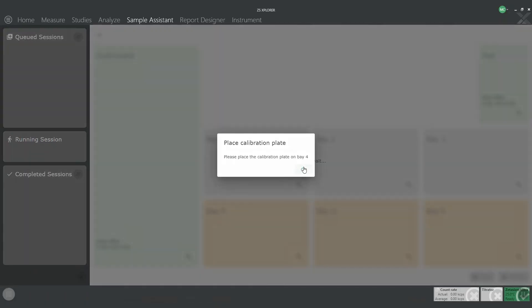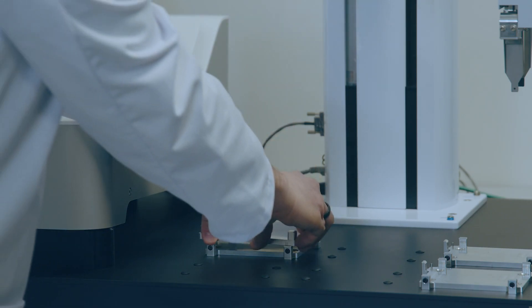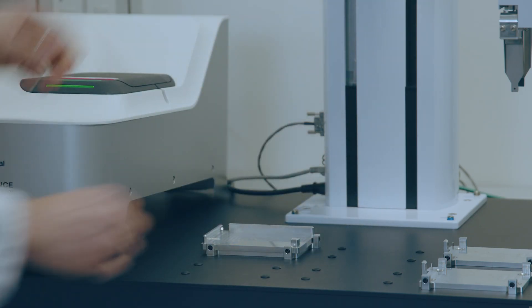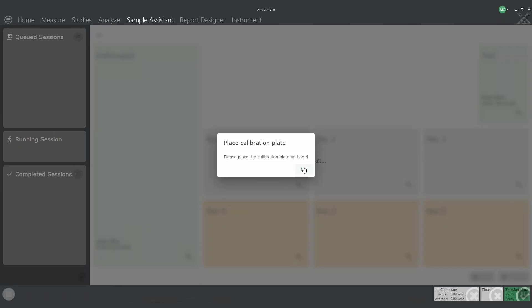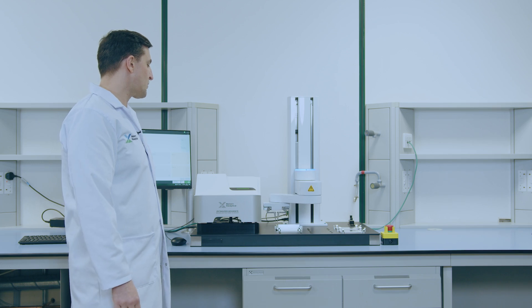Once this location has been found, the software will ask you to place the tray calibration tool on the position. Once it's in position, just press OK and the arm will finish the configuration process.